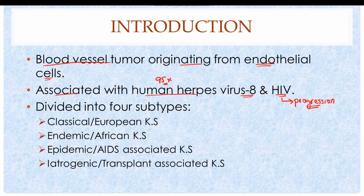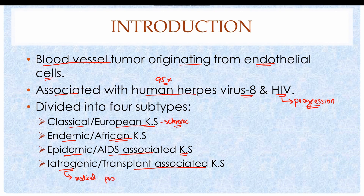The first is the classical or European Kaposi Sarcoma, also known as chronic Kaposi Sarcoma. The second is the endemic or African Kaposi Sarcoma. Third is the epidemic or HIV AIDS-associated Kaposi Sarcoma. The last one is iatrogenic or transplant-associated Kaposi Sarcoma — iatrogenic means occurring due to a medical procedure, such as transplant.